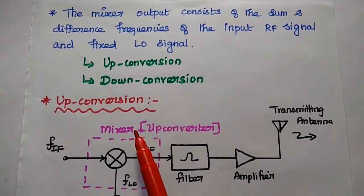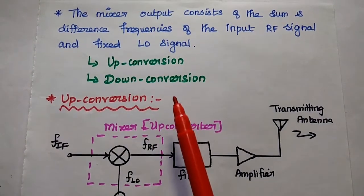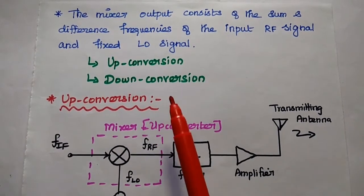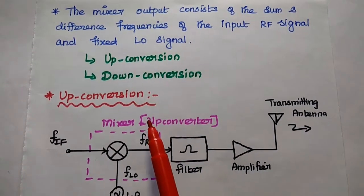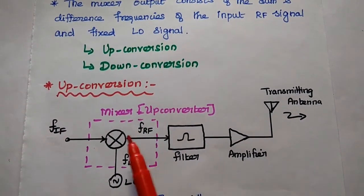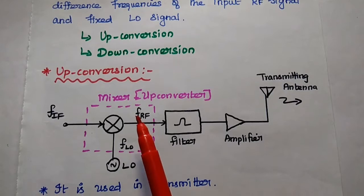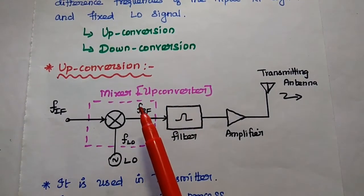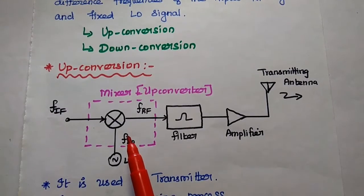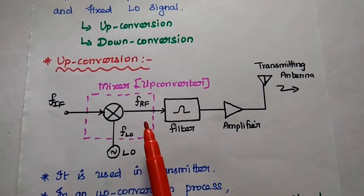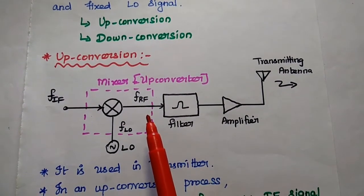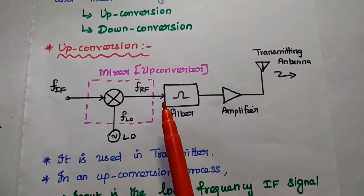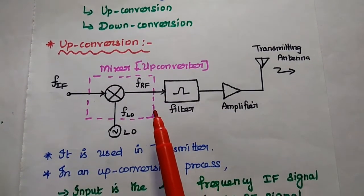There are two operations: up conversion and down conversion. Based on the applications, we can select either up conversion or down conversion. Up conversion is used in the transmitter side to transmit the RF signal to a longer distance, while down conversion is widely used in the receiver side, especially in the super heterodyne receiver.